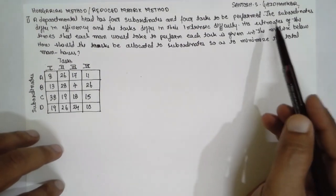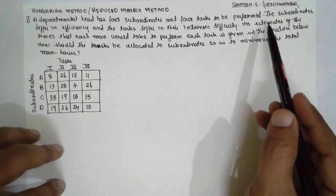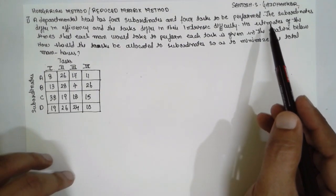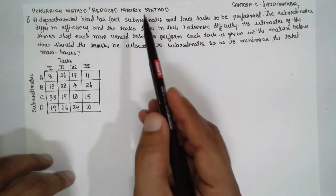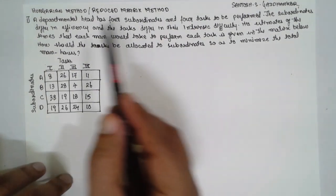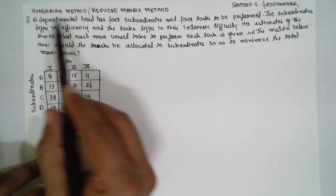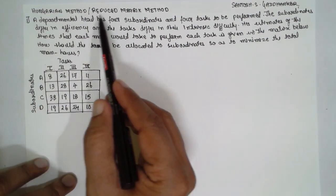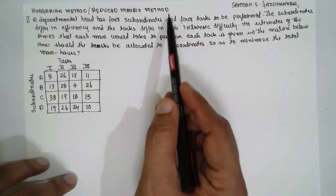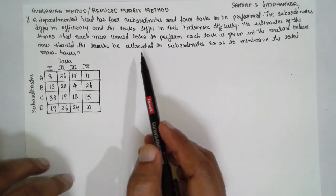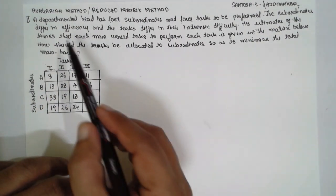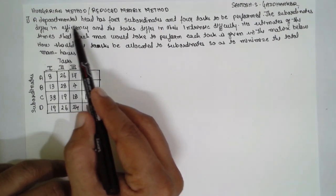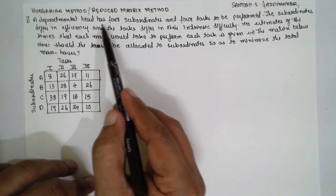I am Santosh Gankar. Today I am teaching you Operation Research — specifically the Assignment Problem, solved using the Hungarian Method, also called the Reduced Matrix Method. This is the first problem I am going to solve.